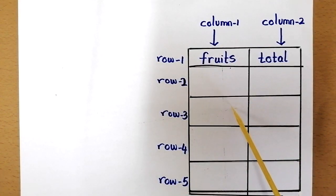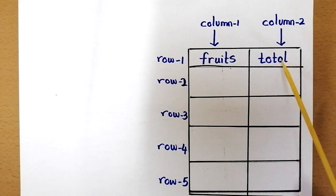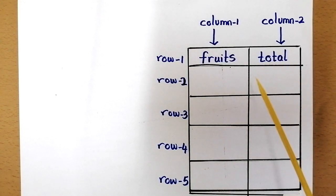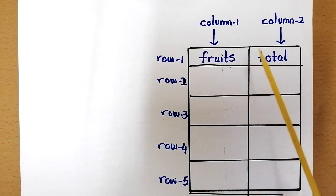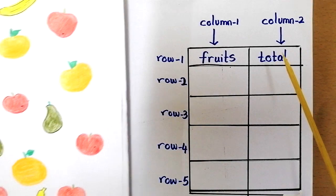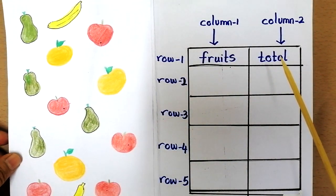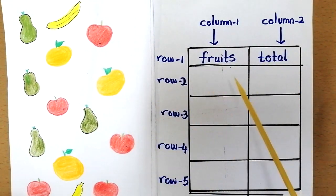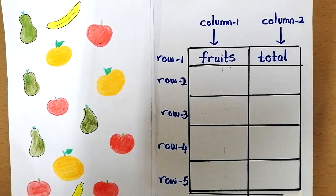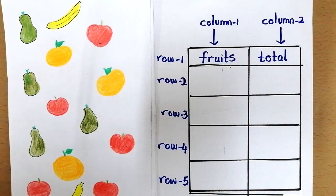You can use the first cell of column one to label the items that you want to represent in the table. The first cell of column two can be used to show the total number of items. Now that we have to represent this data or this information about the fruits into the table, let's see how we can do that.